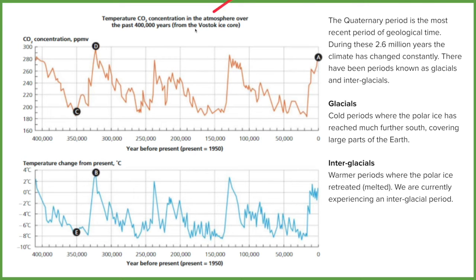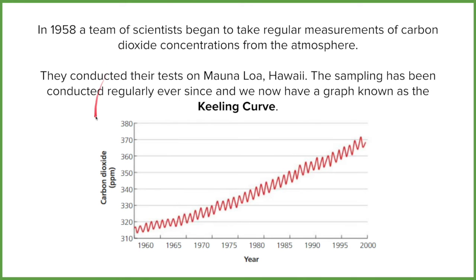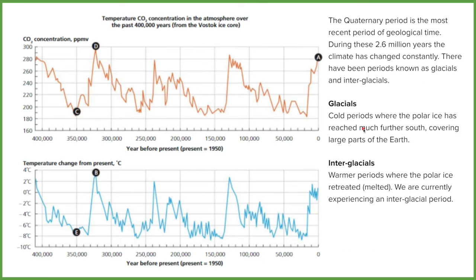One last thing to consider: CO2 doesn't rise above 300 parts per million in the last 400,000 years. But we know from the Keeling Curve that it starts at over 300 and finishes above 370 parts per million. So in the last 60 years, we've seen more carbon in the atmosphere than we've seen over the last 400,000 years.